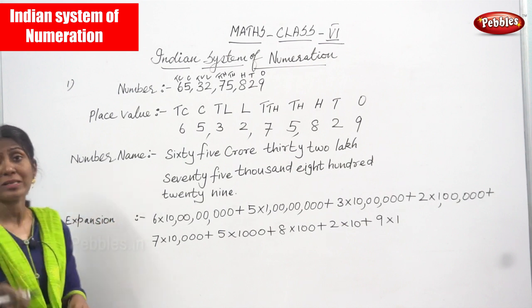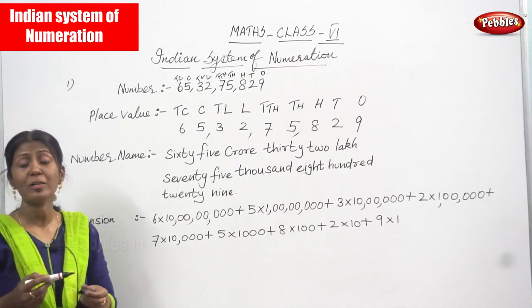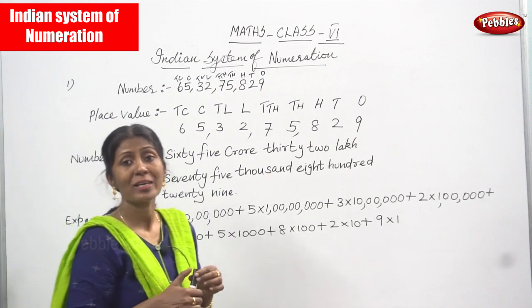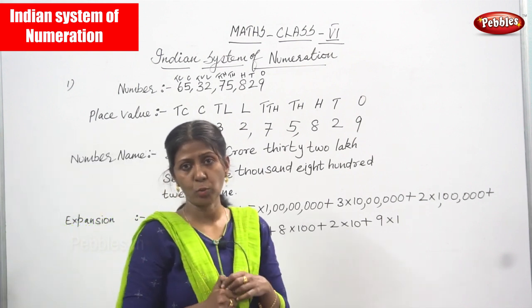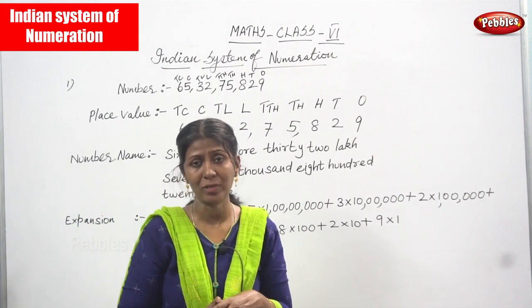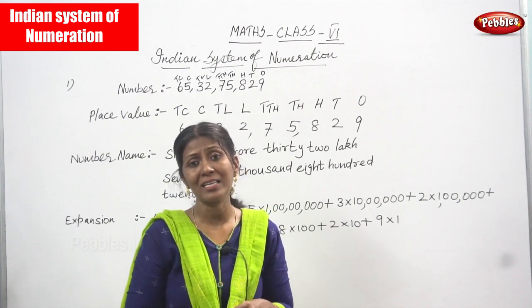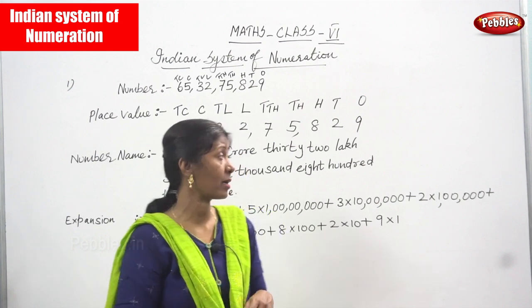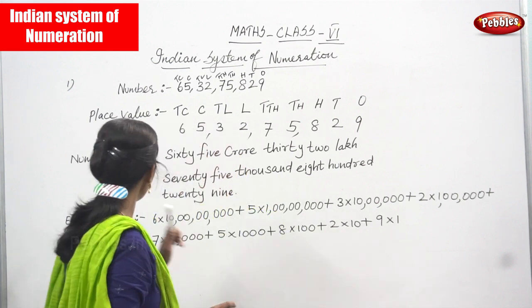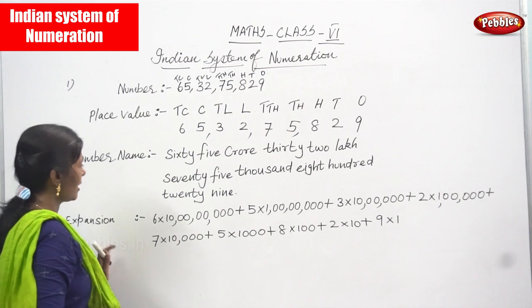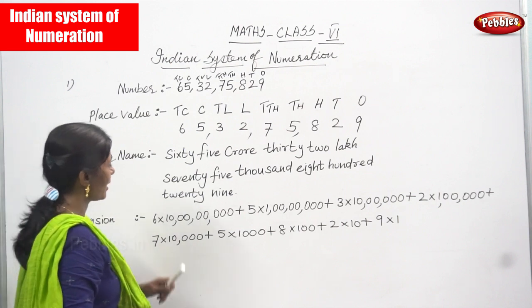If you want to write the number name properly you must know the spelling, so read the spelling thoroughly — that is very important. Then only you can write the number name without any spelling mistake. Now the expansion form — I am going to write the expansion form.